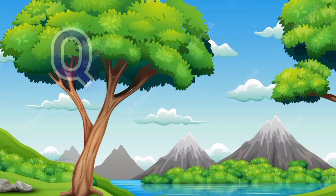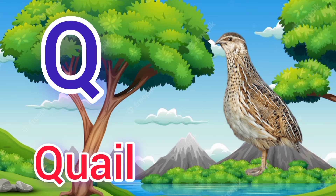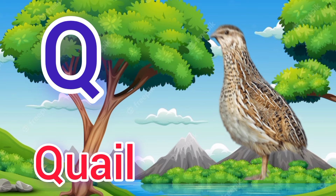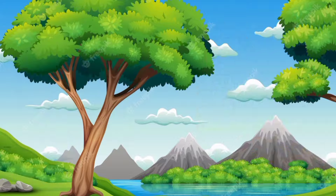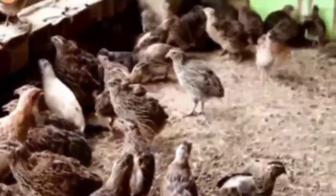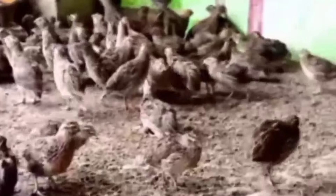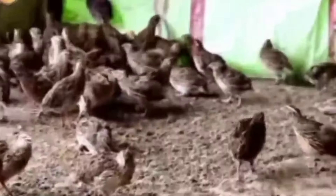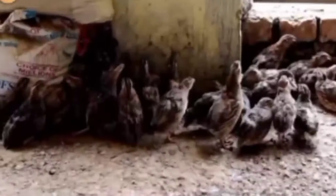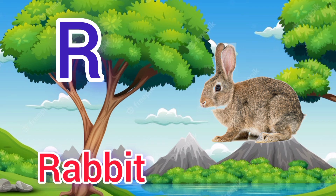Q. Q for quail, quail means bater. R. R for rabbit, rabbit means khargosh.